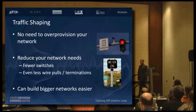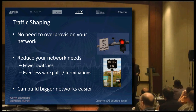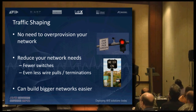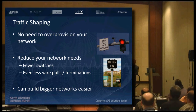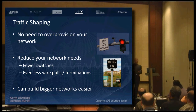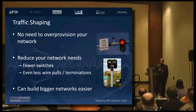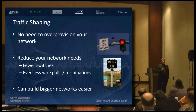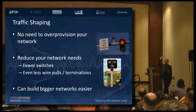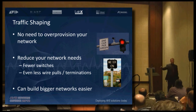Traffic shaping allows the state of California not to have to put in ten-lane roads. Or, for you to have the flip side — they can't afford it, so you'd be spending even more time in traffic. That's where the California highway analogy breaks down: traffic shaping doesn't solve all problems. But once you don't need to over-provision your network because you don't have these giant peaks of data hitting you, it smooths out.